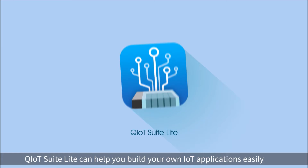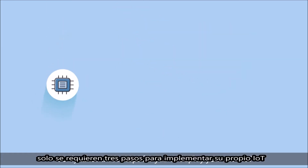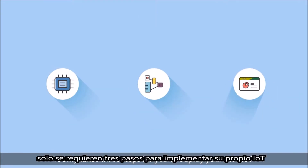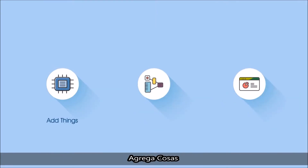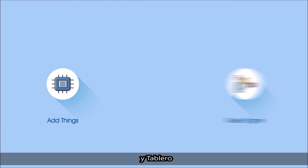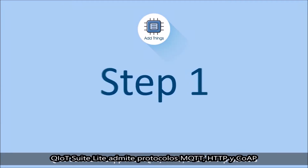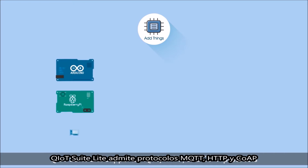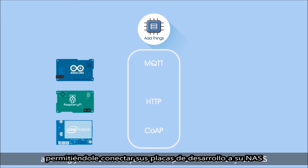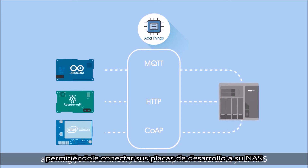QIOT SuiteLite can help you build your own IoT applications easily. It only takes three steps for you to deploy your own IoT: add things, a rules engine, and a dashboard. QIOT SuiteLite supports MQTT, HTTP, and CoAP protocols, allowing you to connect your development boards to your NAS.